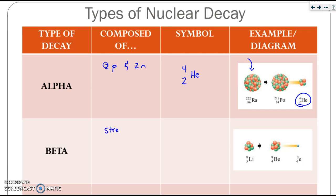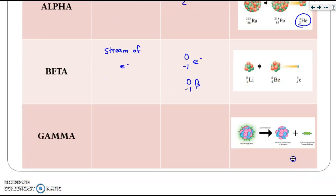Beta particles are a stream of electrons, and the beta symbol is 0, negative 1, e. Sometimes you'll also see it written as 0, negative 1, beta. The same thing takes place as with alpha: you start with one thing, and it breaks into two, one of which is your beta particle. The third type of nuclear decay is gamma. Gamma is not a particle — instead, it is the release of extra energy, so it's a high-energy ray. As shown in the diagram, something that undergoes gamma decay doesn't change its protons or neutrons, but it releases that energy.